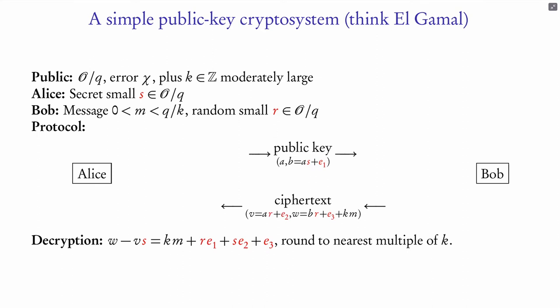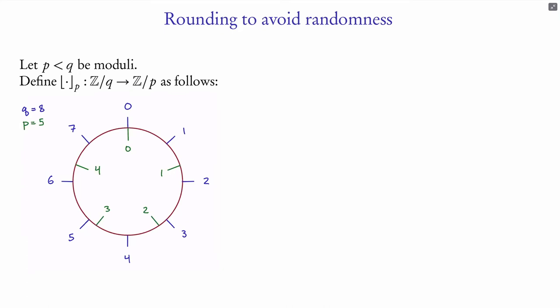In the title there's also Ring Learning With Rounding. This hasn't been looked at as much — people are turning to removing the errors and replacing them with rounding. The errors require randomness in your cryptosystem, which is costly for implementation since you have to trust that randomness. One way to make it deterministic: define a function from Z mod q to Z mod p by rounding to the nearest notch on a different clock.